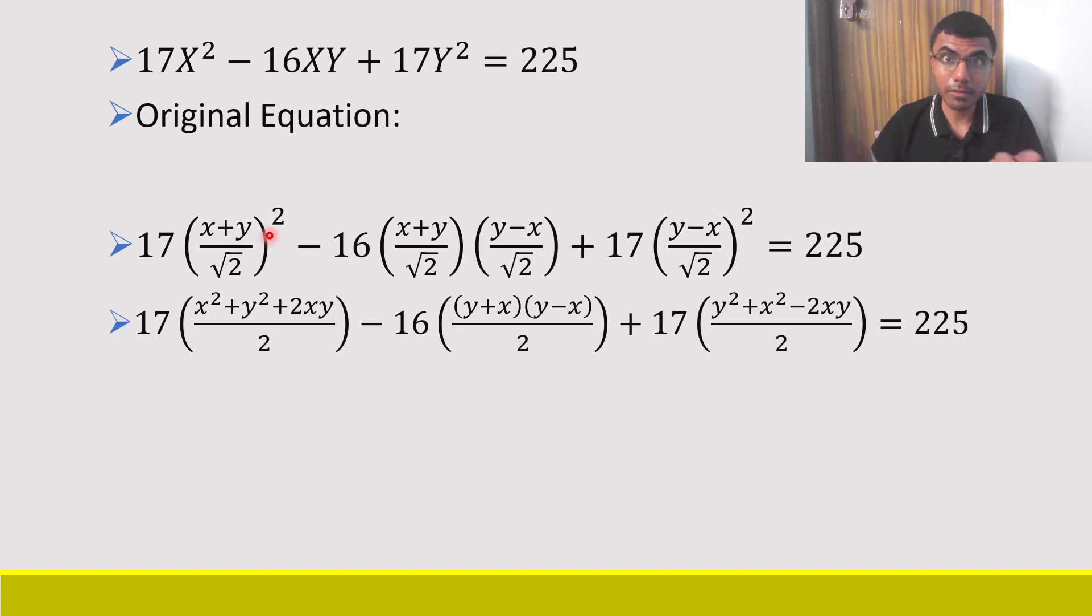What is (x + y)² ? It's x² + y² + 2xy. And here what I'm going to do is I'm going to write it as (y + x)(y - x) so that I can apply a + b times a - b later. Here I have (a - b)² which is a² + b² - 2ab. Everything is set.